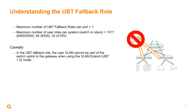One caveat with the fallback role: the user VLAN must exist on the switch when using VLAN extend mode. That VLAN cannot be part of the uplink to the gateway when using VLAN extend mode or UBT 1.0, as you'll have MAC address moves on the same link which could cause issues. Make sure you have a separate VLAN from the uplink — so if your data VLAN is 15, your management VLAN providing connectivity from the switch to the gateway might be VLAN 20, keeping them separate.